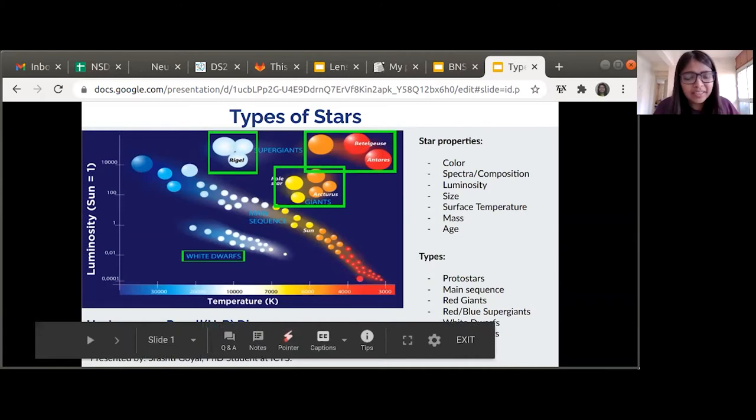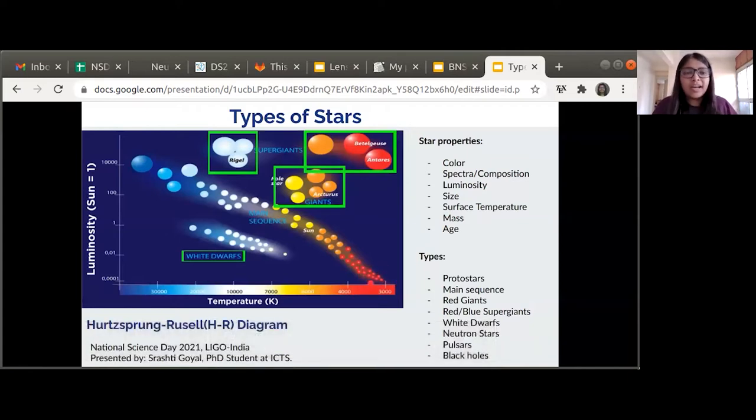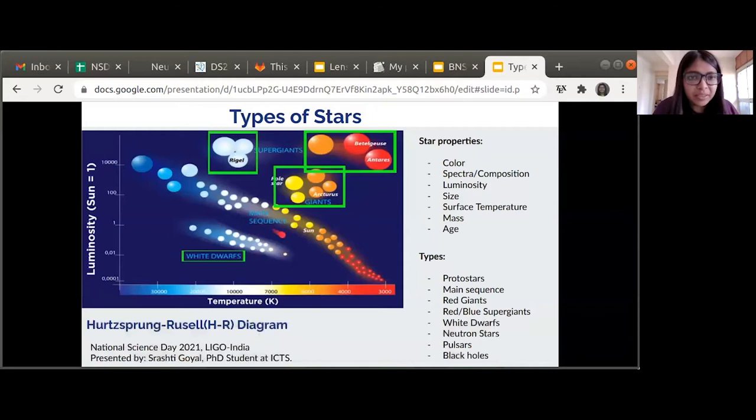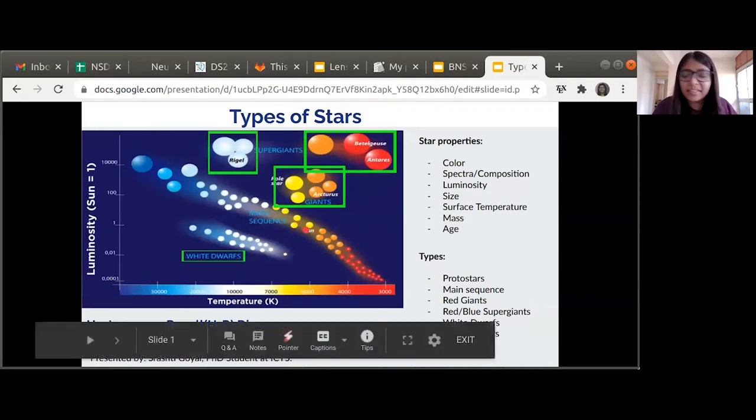Here you see that there is a clear pattern between the color, mass, size, luminosity, and temperature of the stars. The smaller stars, which are red in color, are cooler and less luminous, whereas the blue stars are more luminous, high in temperature, and are bigger in size. As you see, the sun is also a main sequence star and it's yellow in color.